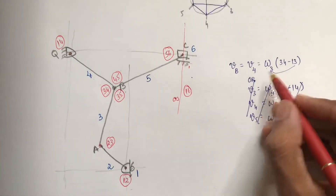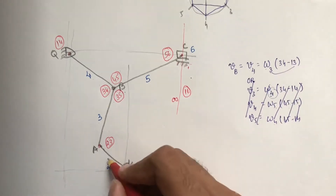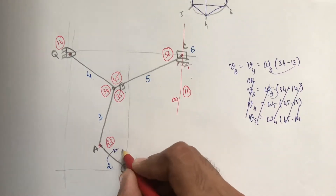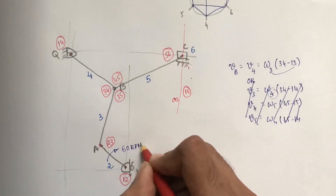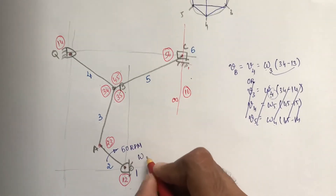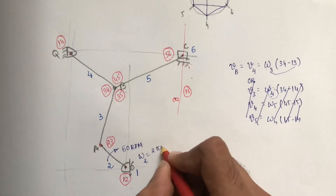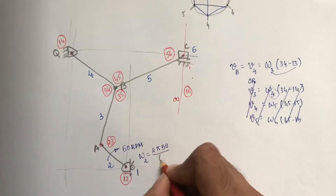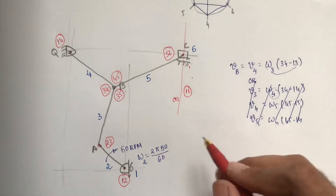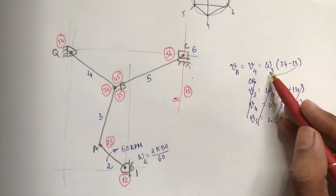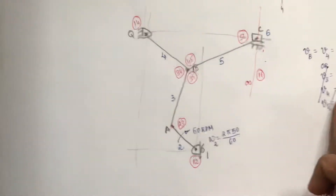omega_2 is not directly given in angular form but the speed is 50 RPM. So omega_2 = 2π × 50 / 60 = 5.23 rad/s. We don't have omega_3 directly, so we will find it using the ratio method.